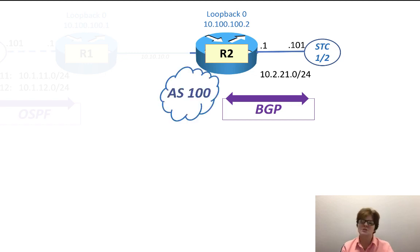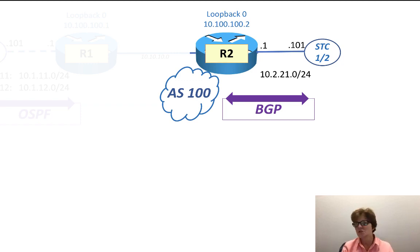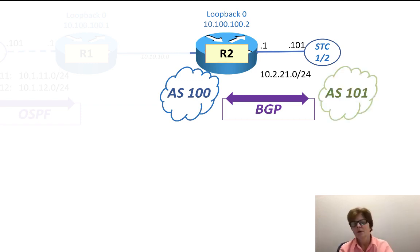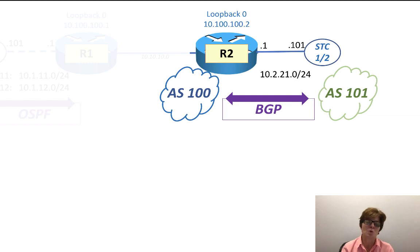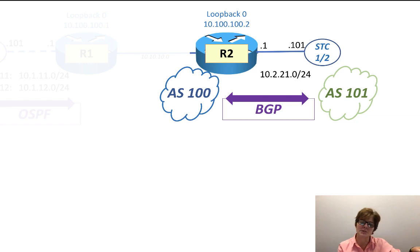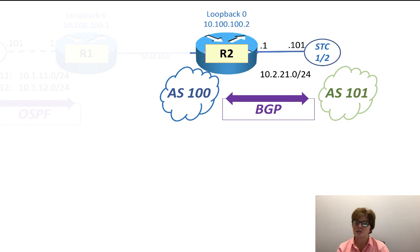Autonomous System 100 will be Router2, so Router2 will be BGP Autonomous System 100. We'll make the Spirent Test Center port Autonomous System 101. It's extremely common that when people are asking for just one BGP peer, they're going to be asking for eBGP or external BGP, which means the Autonomous System numbers are not going to be the same.